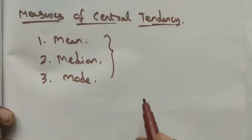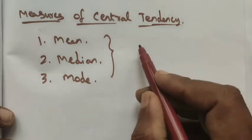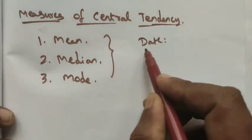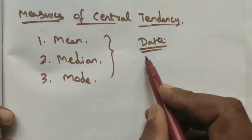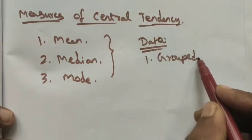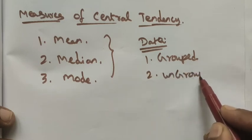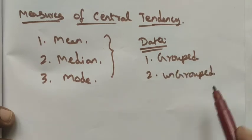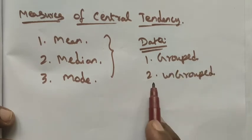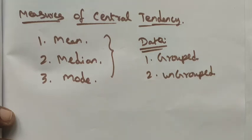Here we have two types of data. Data is in two forms: one is grouped and another one is ungrouped. What is the difference between ungrouped and grouped data? Ungrouped means a particular student's marks in all subjects.